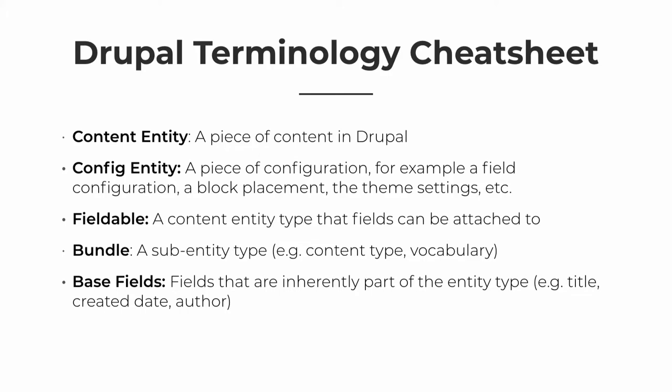What we're focusing on today is content. Content entities are when you're creating actual bits of content — this could be nodes, custom blocks, terms, users, comments, etc. When you're checking checkboxes and setting up new views, that's configuration entities. It's really important to know the difference, and today everything I'm talking about is about content.